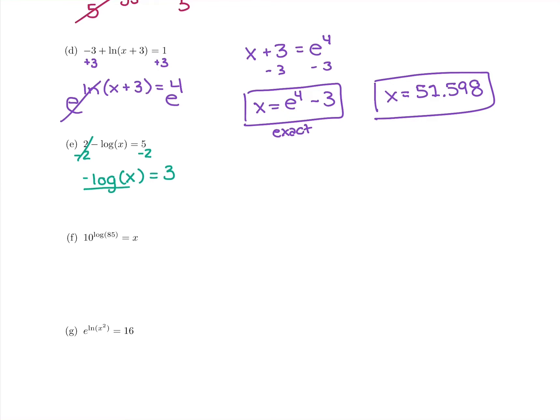I don't quite have the log by itself because it's multiplied by negative 1. So I need to divide both sides by that negative 1 coefficient to get rid of it. That way I get log of x equals 3 divided by negative 1 is negative 3.